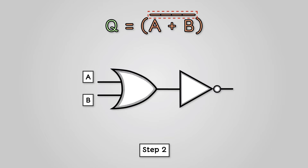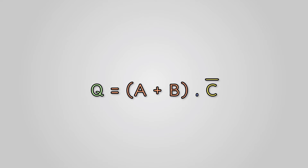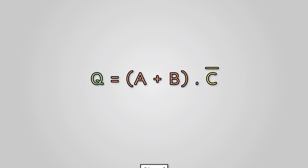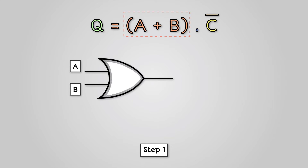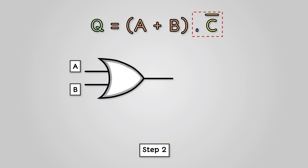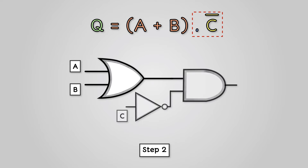Let's work through one final circuit and this will be a little bit more complex. Q equals (A OR B) AND NOT C. Step 1: Start with the brackets — this is the A OR B part. Just like our previous circuit, we simply need to draw an OR gate with the two inputs A and B. Step 2: Add the outer expression — this is the AND NOT C part. Here the result of A OR B is used as an input on an AND gate with NOT C. And that's our final logic circuit example completed.